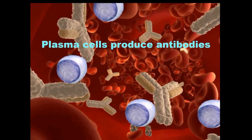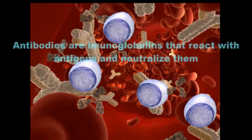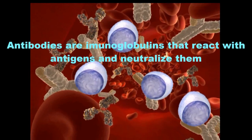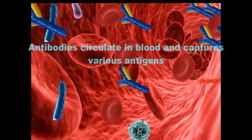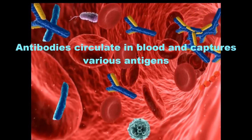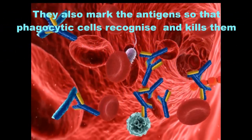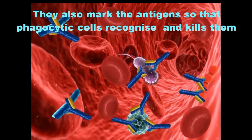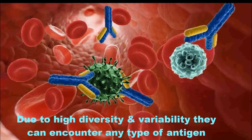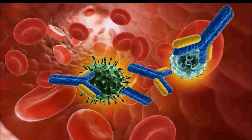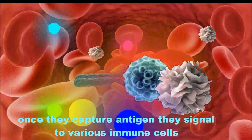Plasma cells produce antibodies. Antibodies are immunoglobulins that react with antigens and neutralize them. Antibodies circulate in the blood and capture various antigens. They also mark antigens so that phagocytic cells can recognize and kill them. Due to high diversity and variability, they can encounter any type of antigen. Once they capture an antigen, they signal various immune cells such as macrophages, cytokines, etc.